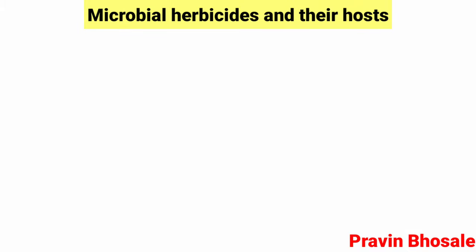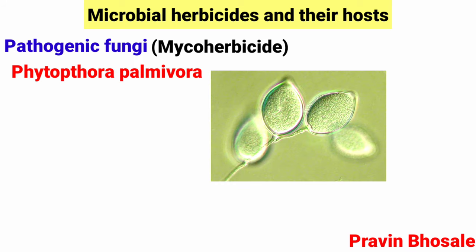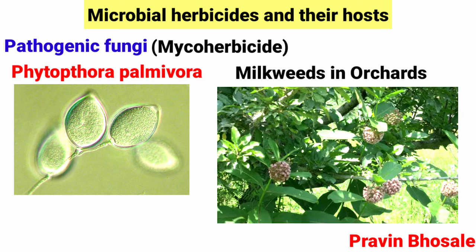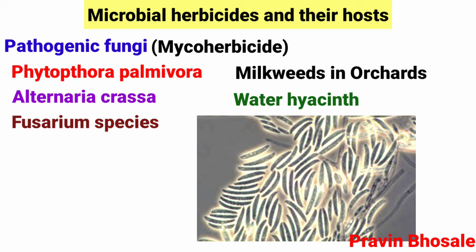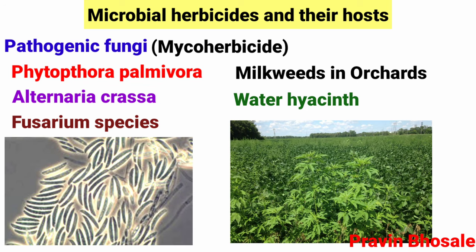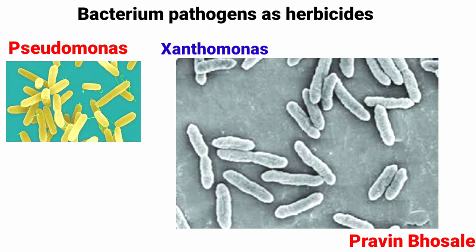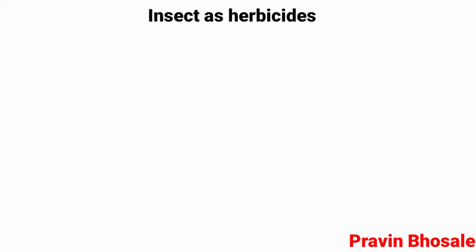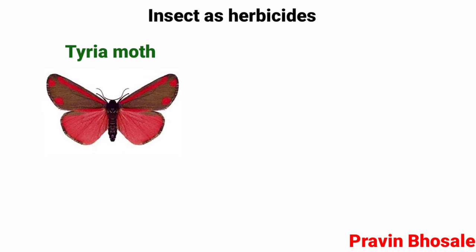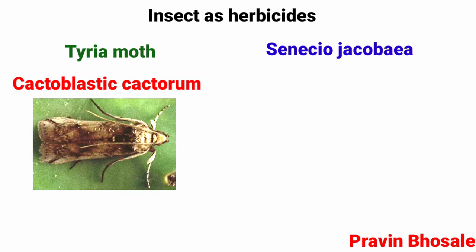Microbial herbicides and their hosts: Pathogenic fungi used as mycoherbicides include Phytophthora palmivora, which controls milkweed in orchids; Alternaria cressa, which controls water hyacinth; and Fusarium species, which control most weeds. Bacterial pathogens used as herbicides include Pseudomonas species, Xanthomonas species, and Agrobacterium species, which attack several weeds. Insects used as herbicides include the Pyrrha moth, which controls the weed Senecio jacobaea, and Cactoblastis cactorum, which controls cacti weeds.